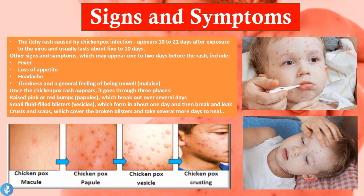Once the chicken pox rash appears it goes through three phases. It begins as a tiny macule — just a red spot on the skin — and then we reach stage one, which is a raised pink or red bump called a papule that breaks out after several days. This is what the papular stage looks like — from the macule red spots we move to these raised red spots.